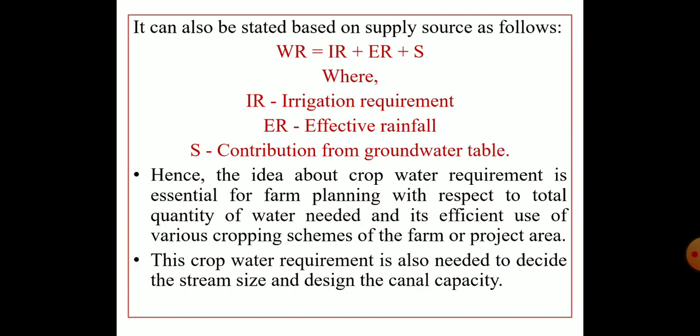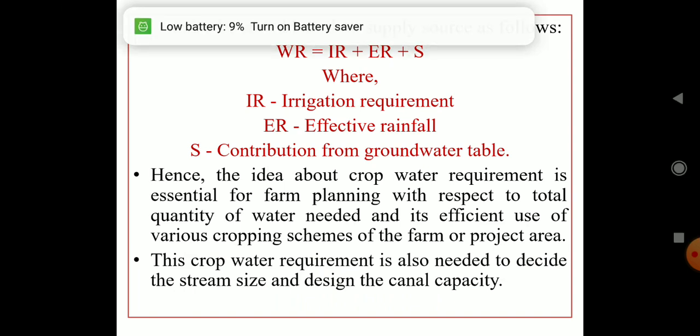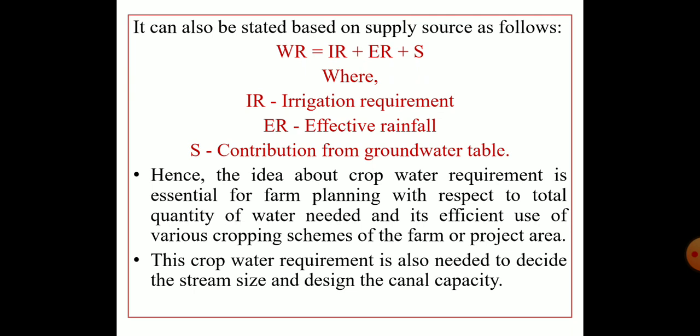Crop water requirement can also be considered in terms of supply. In this case, WR = IR + ER + S, where IR is the irrigation requirement, ER is the effective rainfall, and S is the contribution from the groundwater table. This considers where the water is coming from — whether irrigation, effective rainfall, or the groundwater contribution.